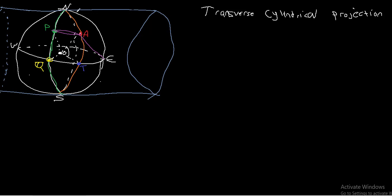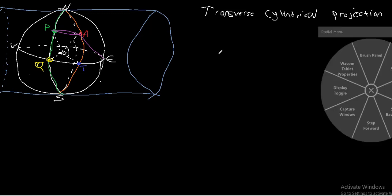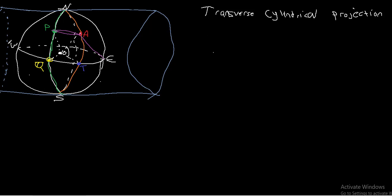Now because we're dealing with a transverse cylindrical projection, if you remember back to the lecture on aspect, this meant that we took that cylinder and we rotated it 90 degrees. So rather than having the cylinder run north-south centered at the equator, we're now having it run east-west and we can pick pretty much any meridian that we want to be the center of our projection.